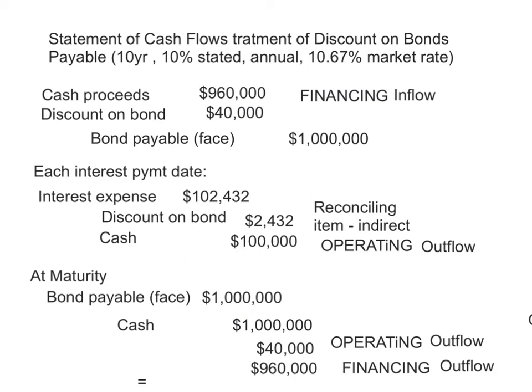Now let's look at the treatment of the discount on bonds payable in the statement of cash flows. Again, a simple 10-year bond, 10% stated rate, 10.67% market rate. When the bonds are issued, we have cash proceeds of $960,000, the bonds payable recorded at face amount of $1,000,000, and a discount of $40,000.